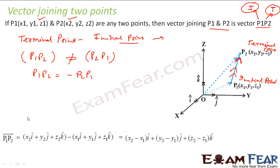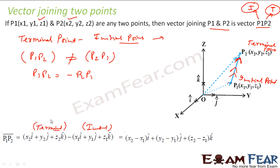So when I say p1p2, the vector is x2, y2, z2 minus x1, y1, z1 — terminal minus initial. Please pay attention here: there is no deep logic, it is all about convention.